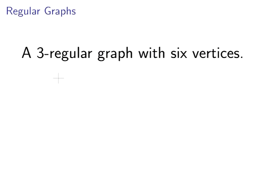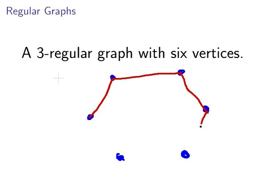So let's draw a 3-regular graph with six vertices. Start off with our vertices — I'm going to draw a little hexagon. So what we have now is a 2-regular graph on six vertices as it stands.